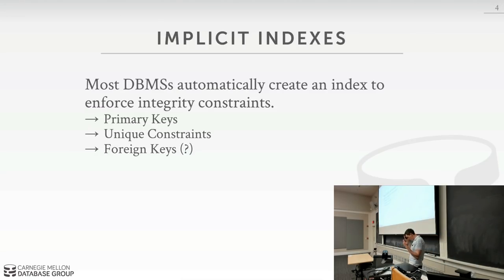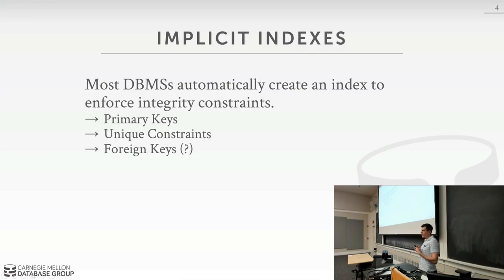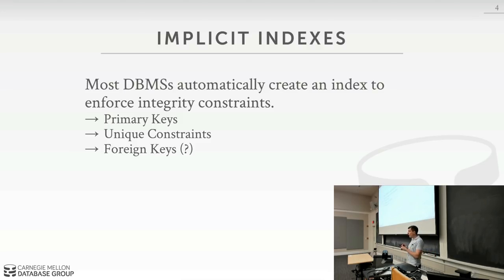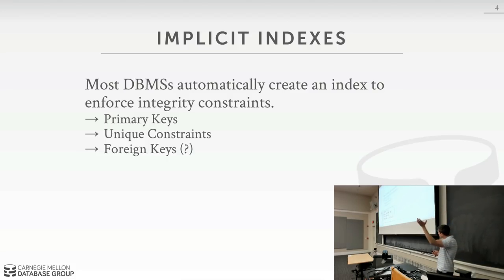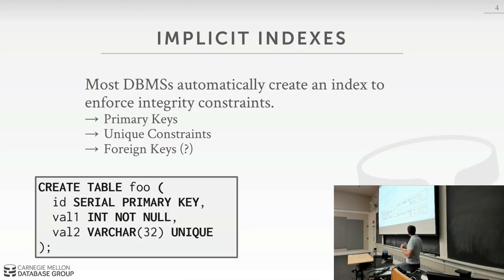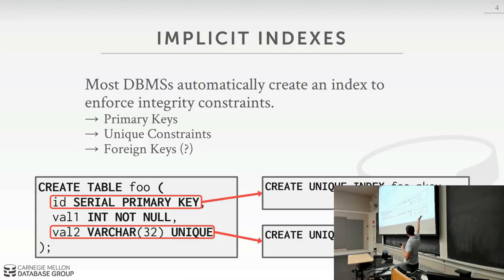Someone had a question at the end of last class about how the database system was actually building these indexes - specifically, are there cases where the database system would automatically build indexes to do certain things? The answer is yes. Most database systems will automatically create indexes to enforce different kinds of constraints - integrity constraints and possibly also referential constraints. An integrity constraint would be like a primary key or unique constraint.